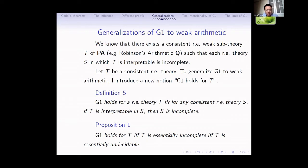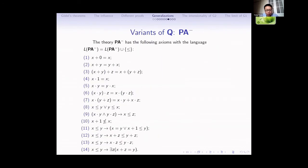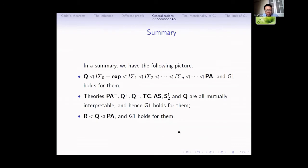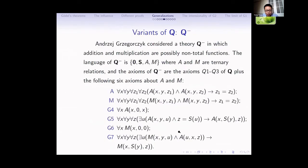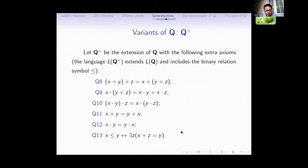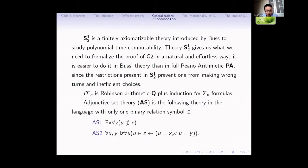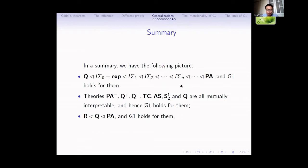I want to give an overview of some examples of weak arithmetic theories for which G1 holds. This is a summary: we have a picture where theories get stronger and stronger with respect to interpretation, and G1 holds for all of them since Q is essentially incomplete. Also, the theories I introduced in the previous slides are all mutually interpretable with Q, so G1 holds for them.